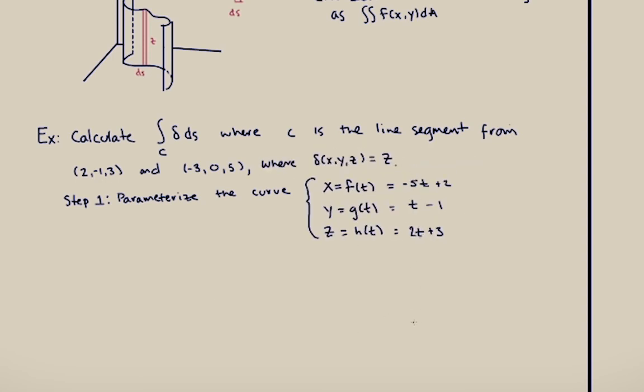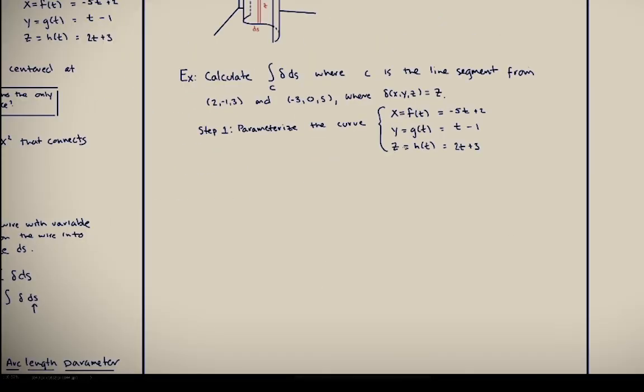All right, enough talk, let's do one. So here we're going to calculate the total mass of a wire where the wire is a straight line that connects these points. I'm super lazy, this is just the line segment from the first example that I did over here, so I just copy and pasted the answers over here.